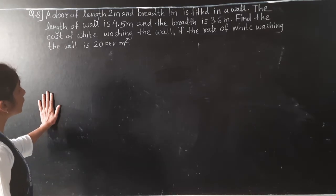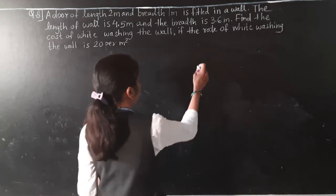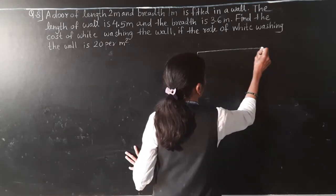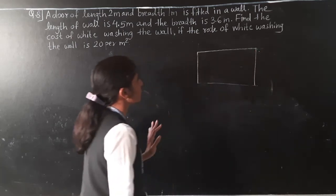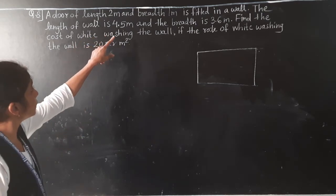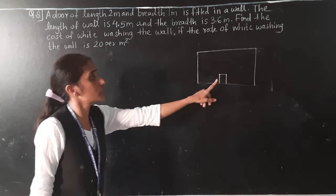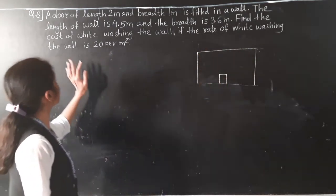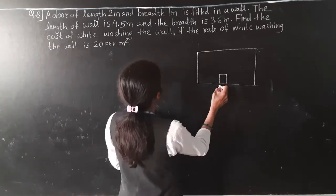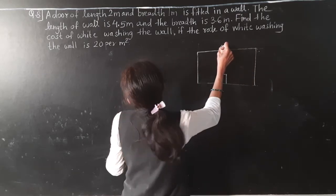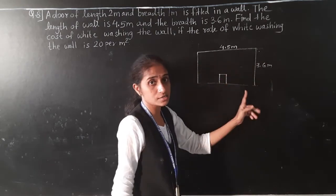Question number 8: A door of length 2 meter and breadth 1 meter is fitted in a wall. The length of the wall is 4.5 meter and the breadth is 3.6 meter. We need to find the cost of white washing the wall, excluding the door area.